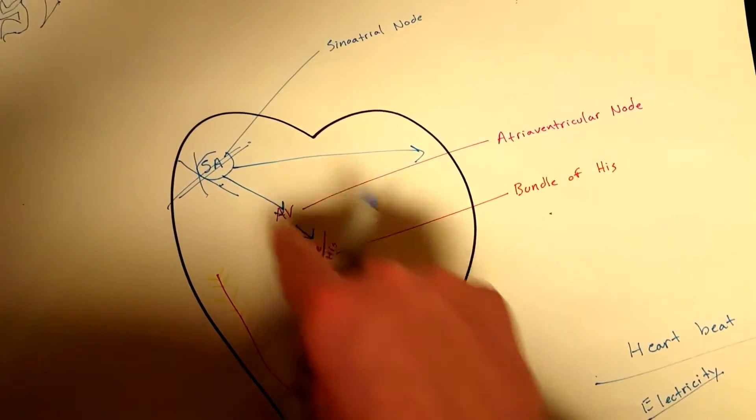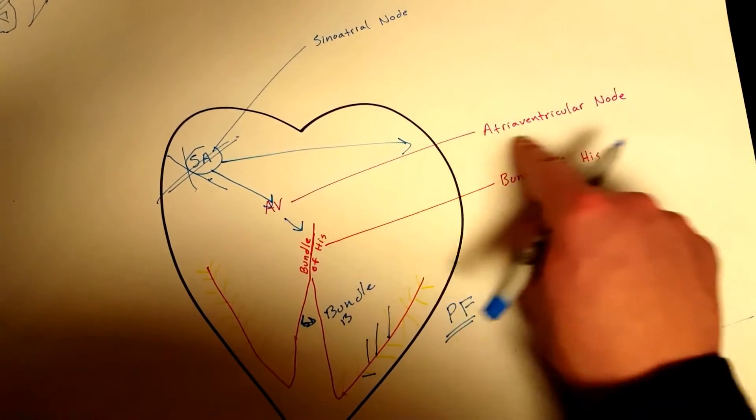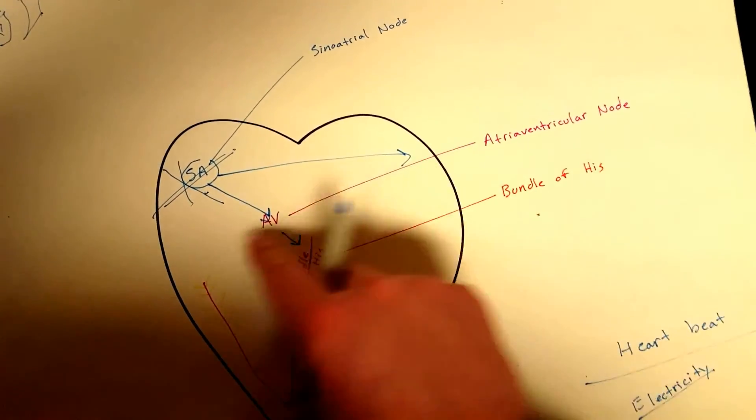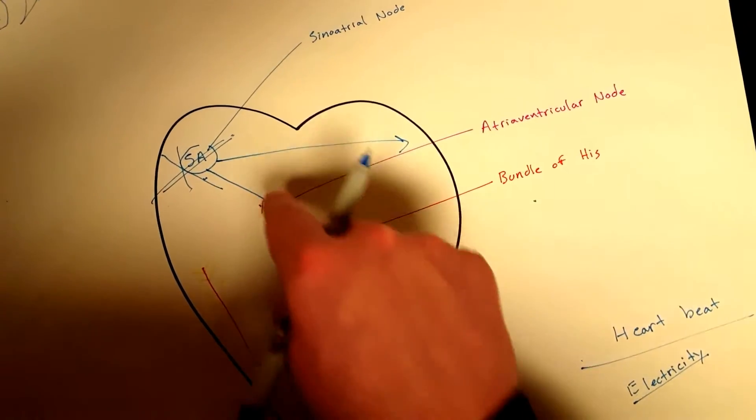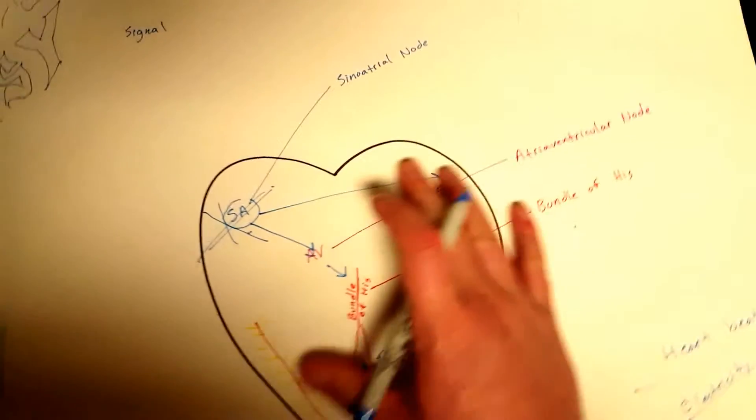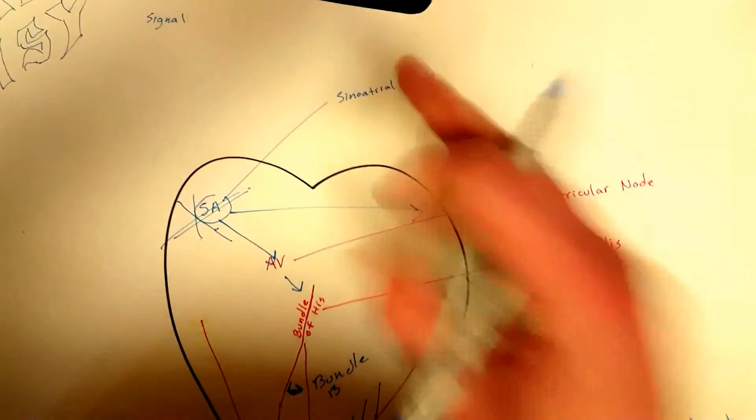The atrioventricular node is like a backup generator to your SA node, and your bundle of His is like a backup generator to your AV node. And I'm just going to go over what they are set at, so how many impulses per minute do they actually spark out to create the contraction.